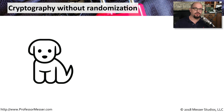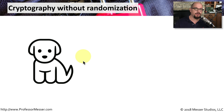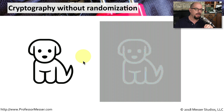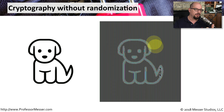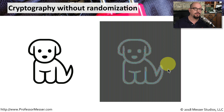In an earlier video, I talked about encryption relying on randomization. Here's a good example. I've got a picture of this dog, and I'm going to encrypt this picture. I'm going to use a block cipher mode called 128-bit ECB, or Electronic Codebook. If I use this particular picture and that particular cipher, I end up with this result, which is an encrypted version of this dog. But because there's no randomization, this particular cipher provides us with a little bit more than what we were expecting from something that might be encrypted.